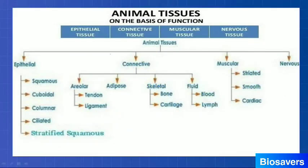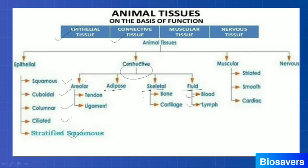Here is the mind map for the types of animal tissue. So far we have completed epithelial tissue and connective tissue. Epithelial tissue has five types: squamous, cuboidal, columnar, ciliated, and stratified squamous. Connective tissue has four main types: areolar tissue, adipose tissue, skeletal tissue, and fluid tissue. Fluid tissue further includes blood and lymph; skeletal tissue includes bone and cartilage; areolar tissue includes tendon and ligament; and adipose tissue contains fat cells.